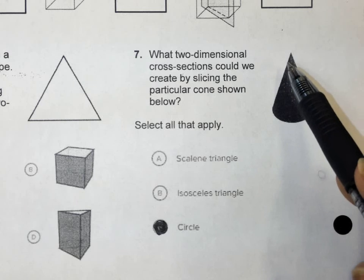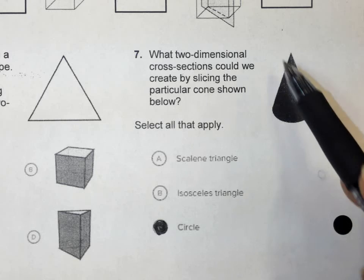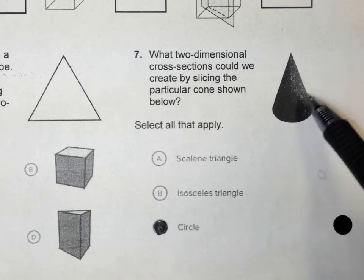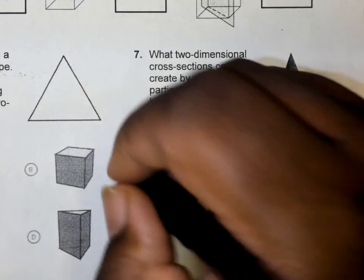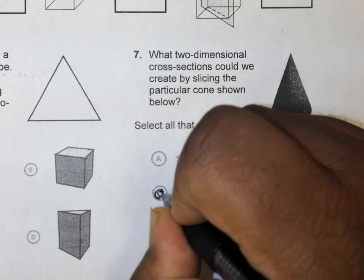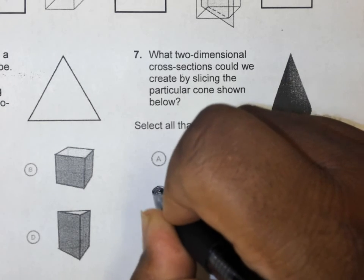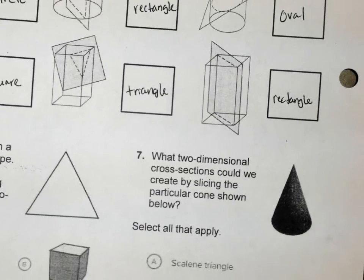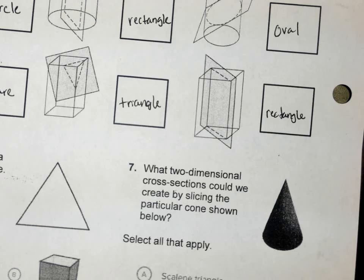Aren't these two slanted sides on this cone congruent? When I slice this and make a triangle, it's going to be an isosceles triangle, right? How y'all can't see that? All right. It's on the computer.